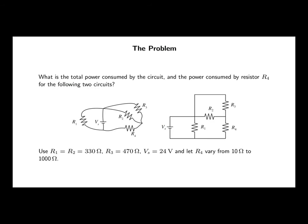Here's the problem. On the left is a circuit that's somewhat disorganized in appearance. On the right is the cleaner version of that same circuit. We give you some values of the resistors — R1, R2, R3, etc. What we want to know is what happens as R4, one of those resistors, varies from 10 ohms to 1,000 ohms.